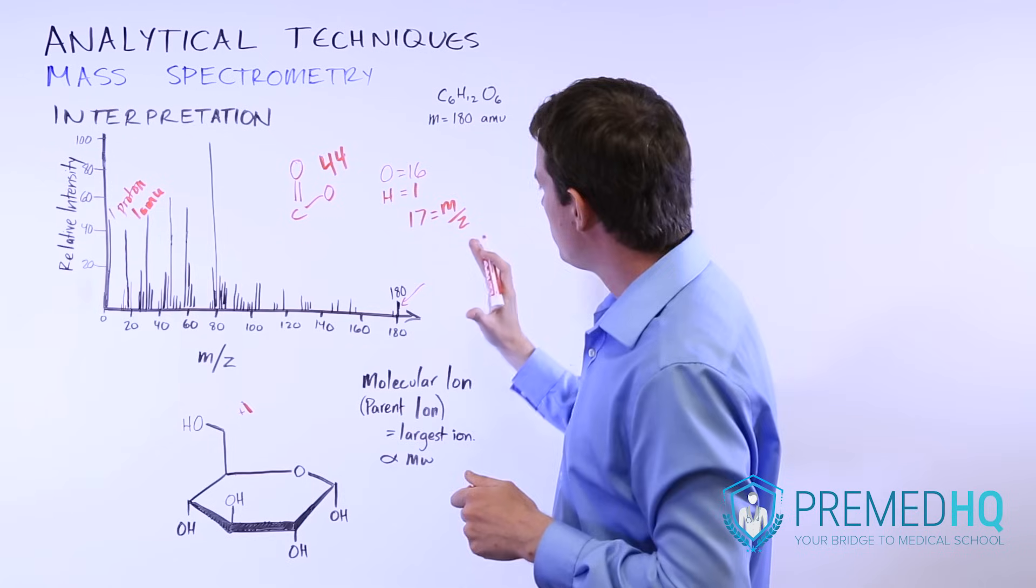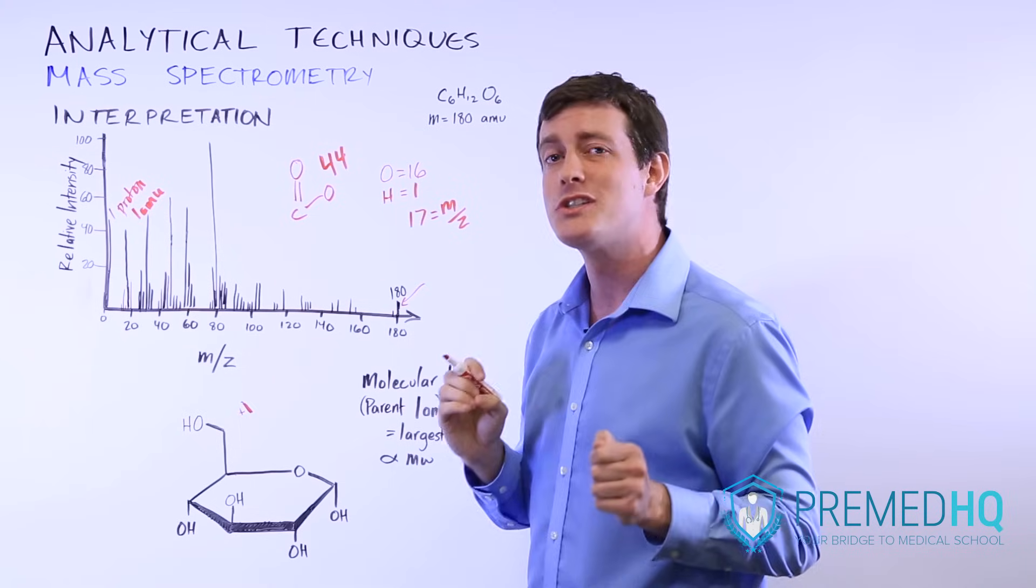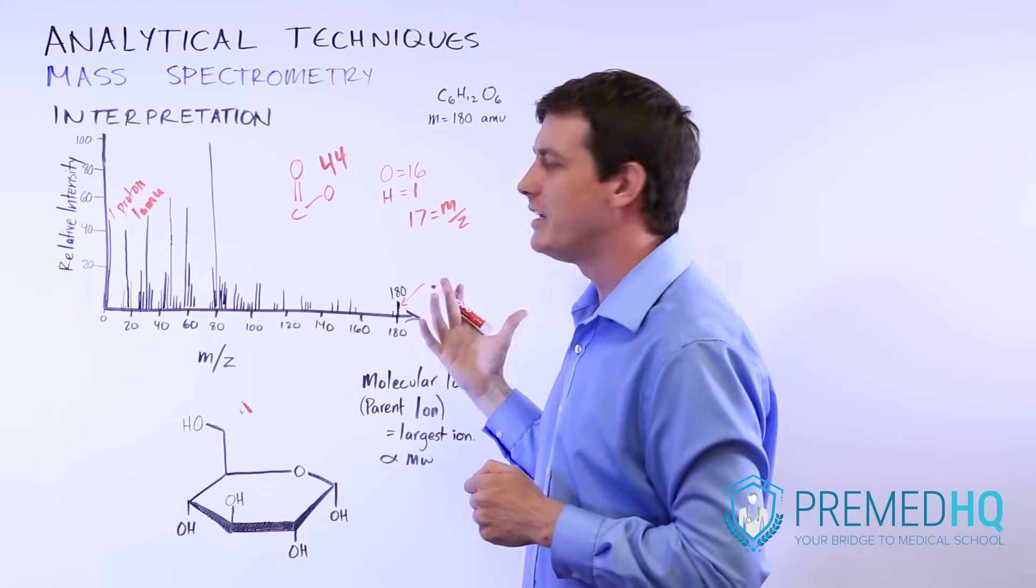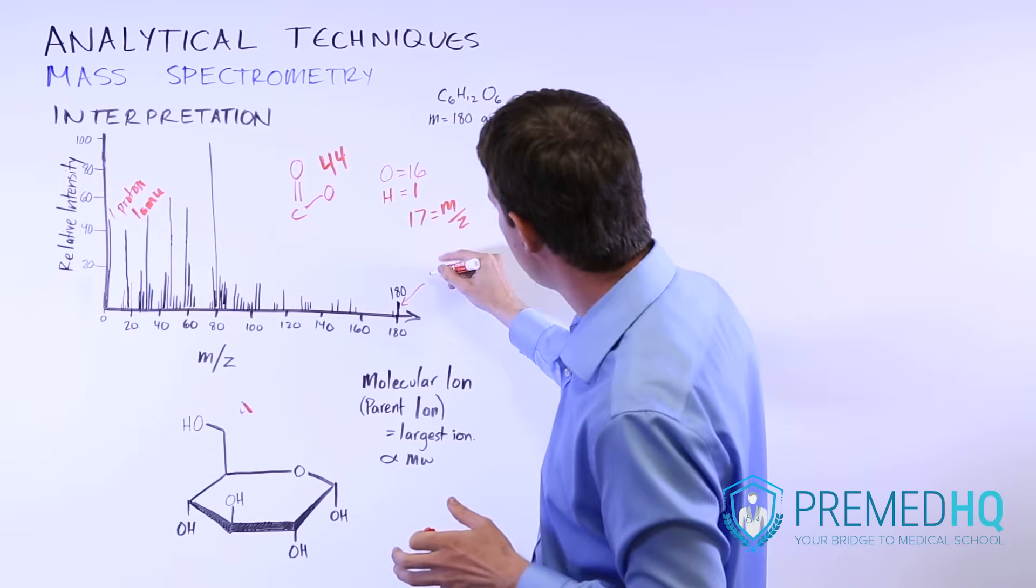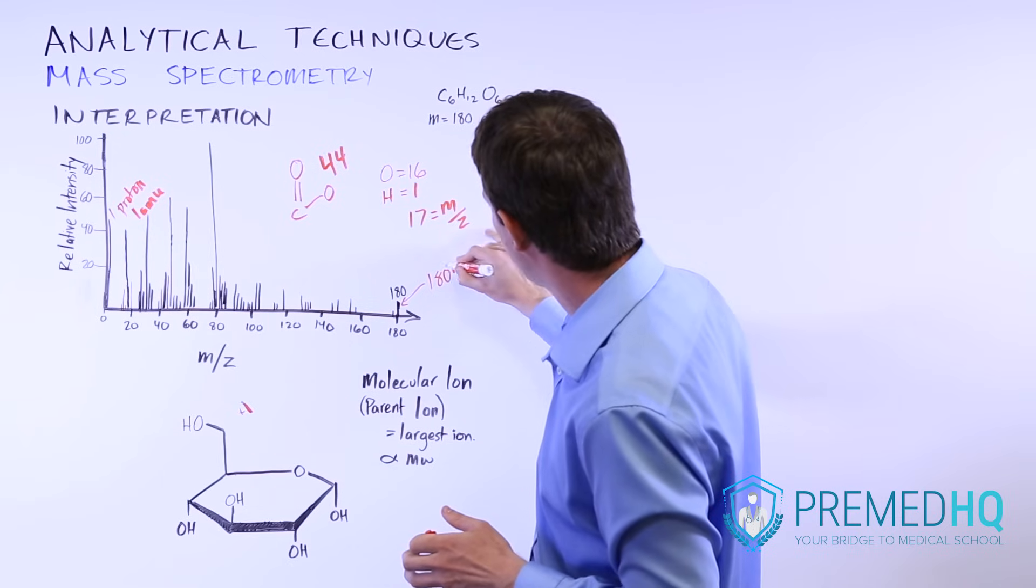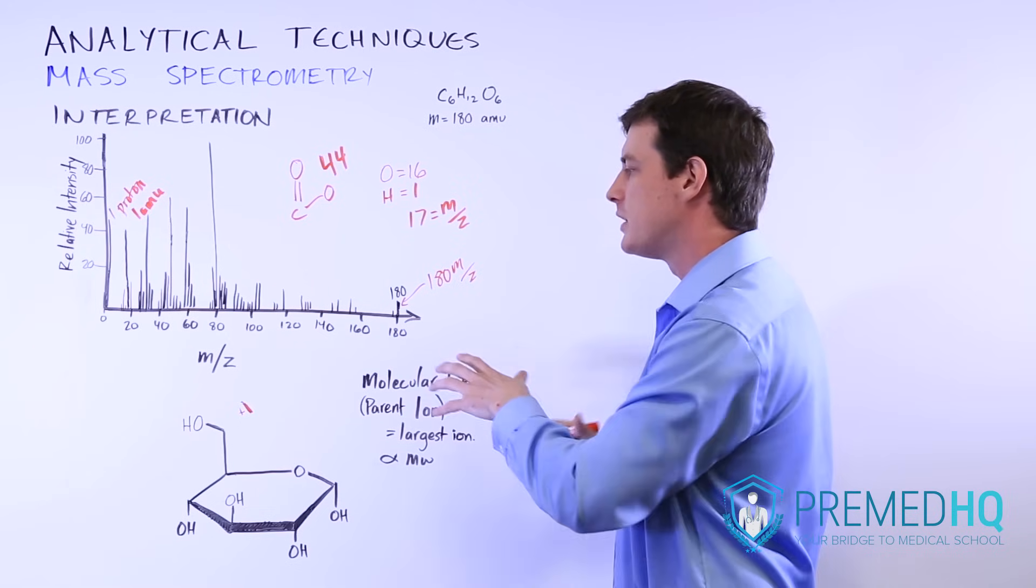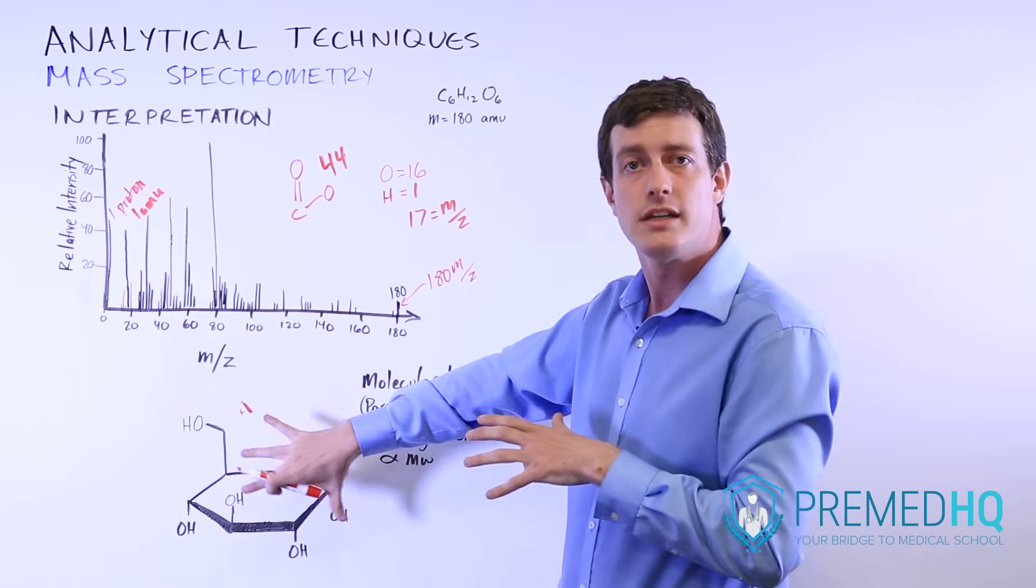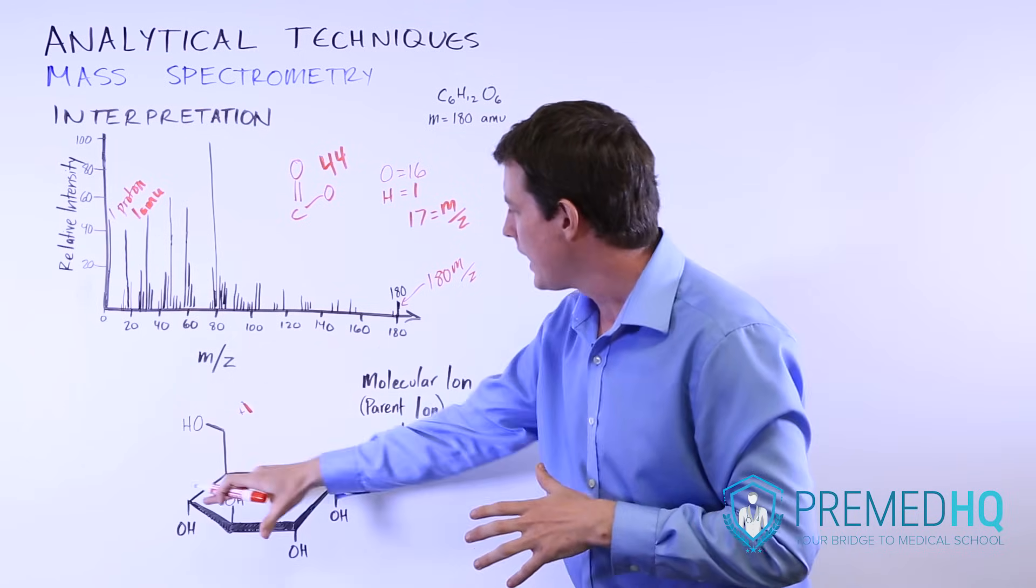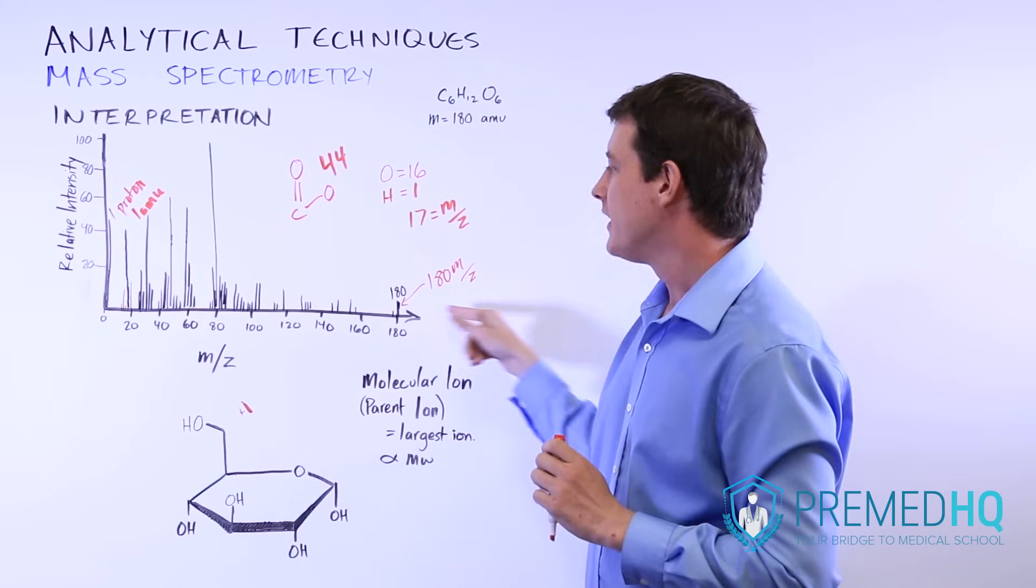That level will tell us how much mass the entire compound has. That's a huge step in interpreting mass spectrometry data and finding out the identity of your unknown. This one, because it is at 180, that's its mass to charge ratio. That helps us realize that whatever our compound is, it has an atomic mass of 180 amu.